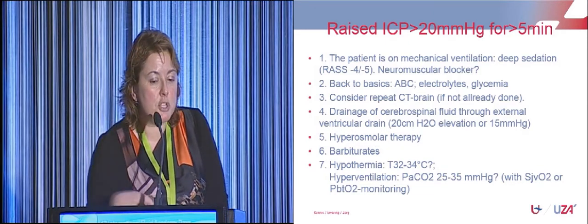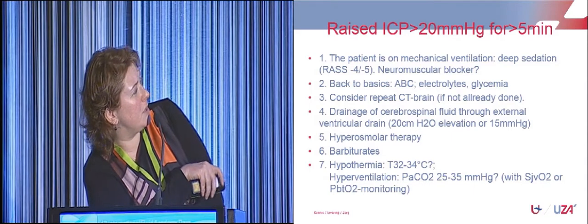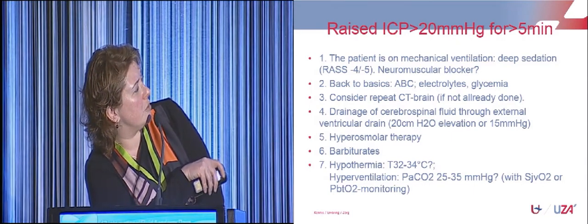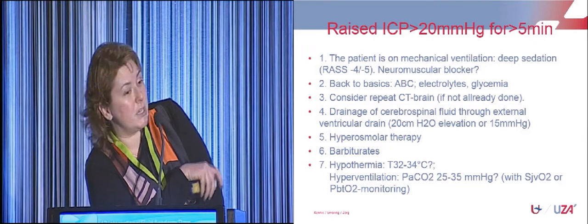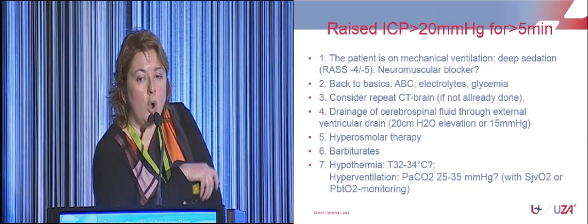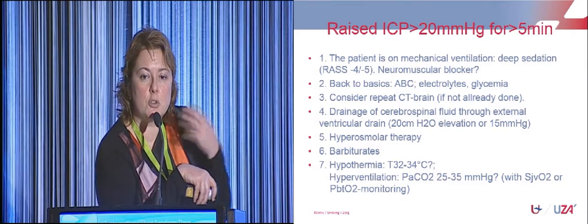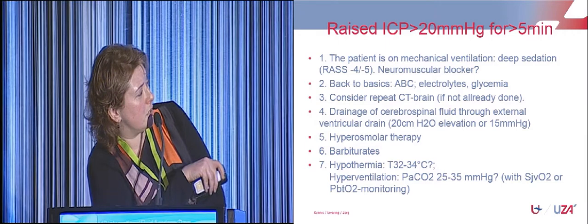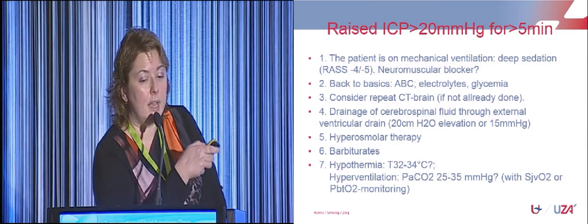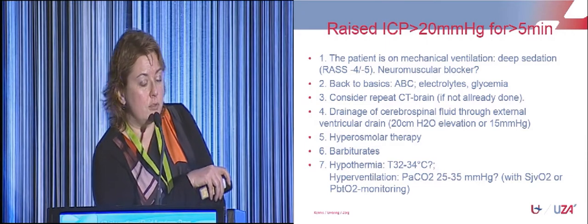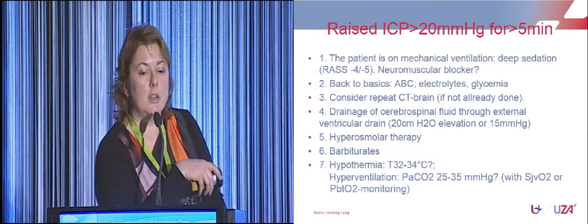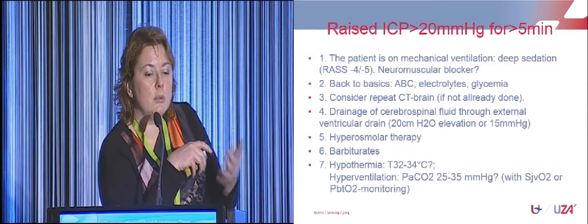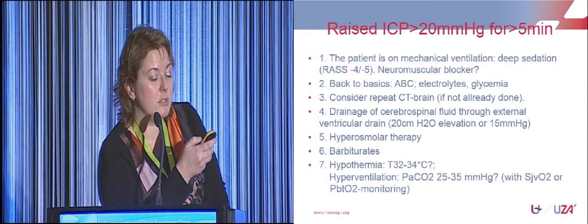Before considering aggressive therapies, try to keep the basics right. Don't jump to ventricular drain management when your patient has a PO2 of 60 or hypoglycemia — correct those first before going further in the step-up protocol. And before going to barbiturates, always look at ICP together with the clinical picture and the CT.